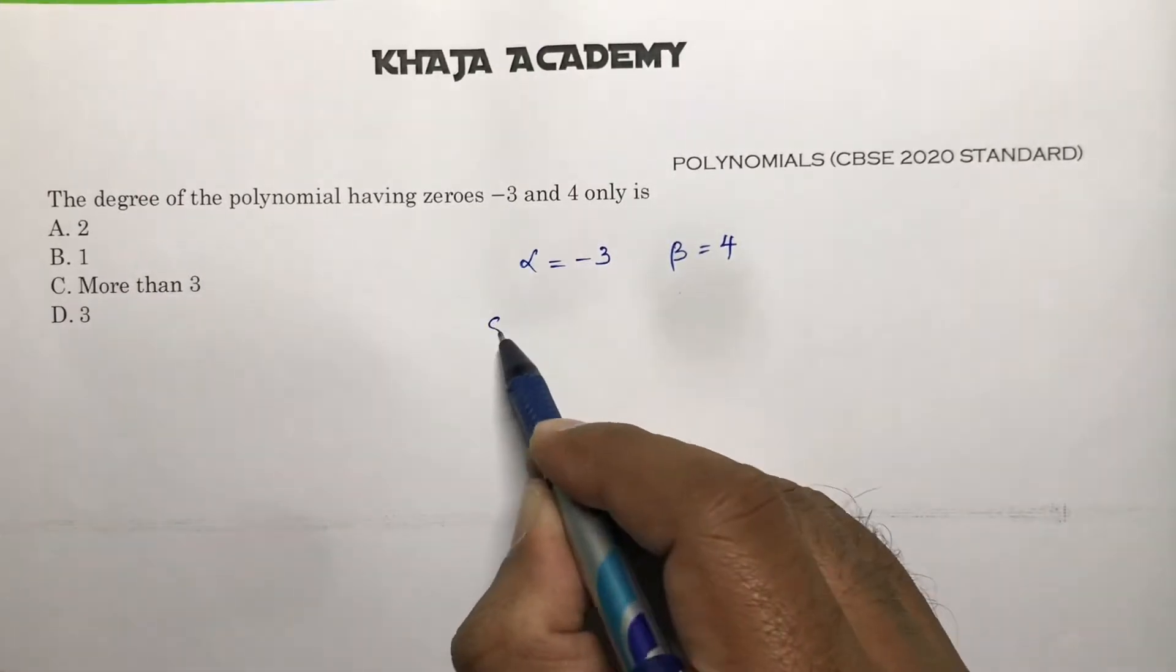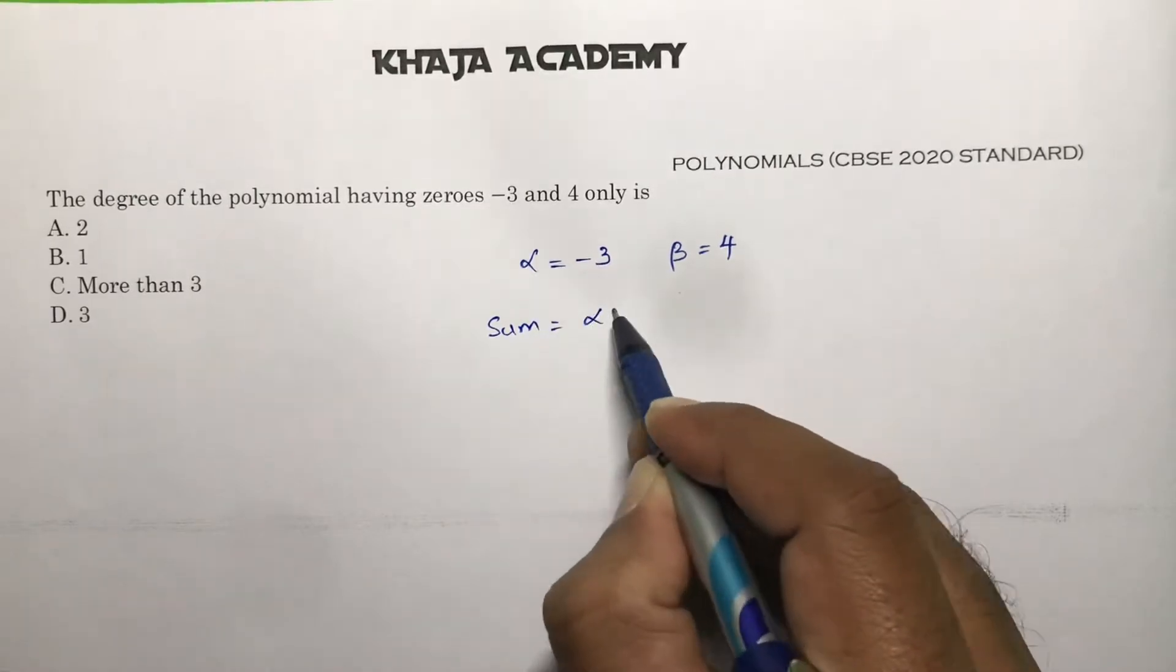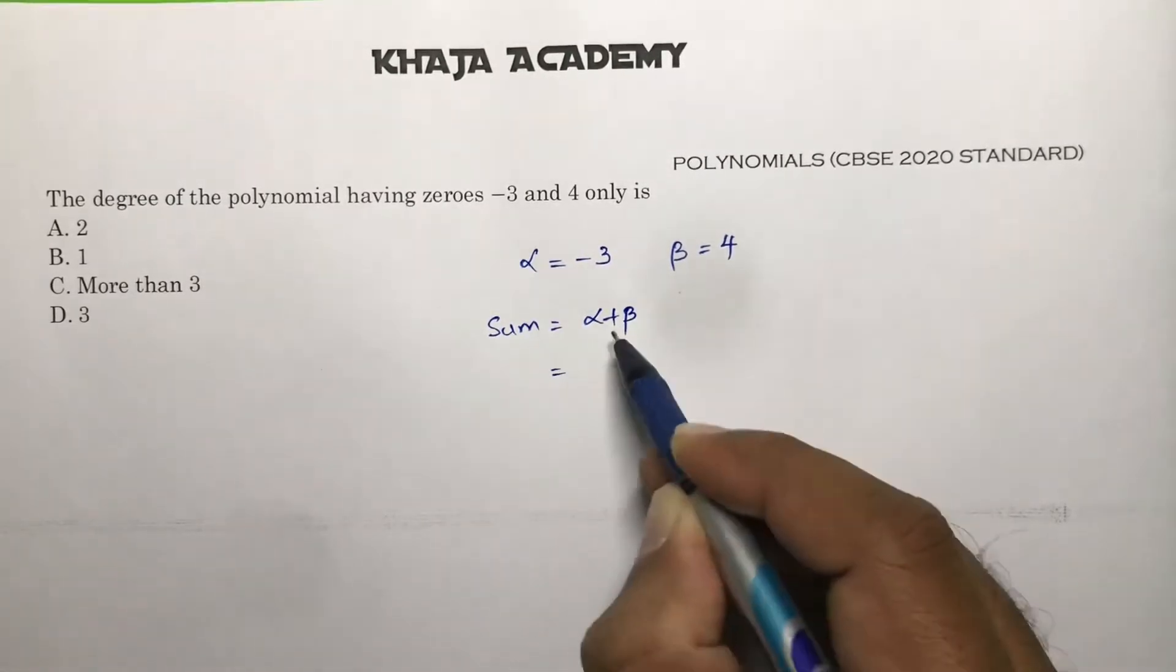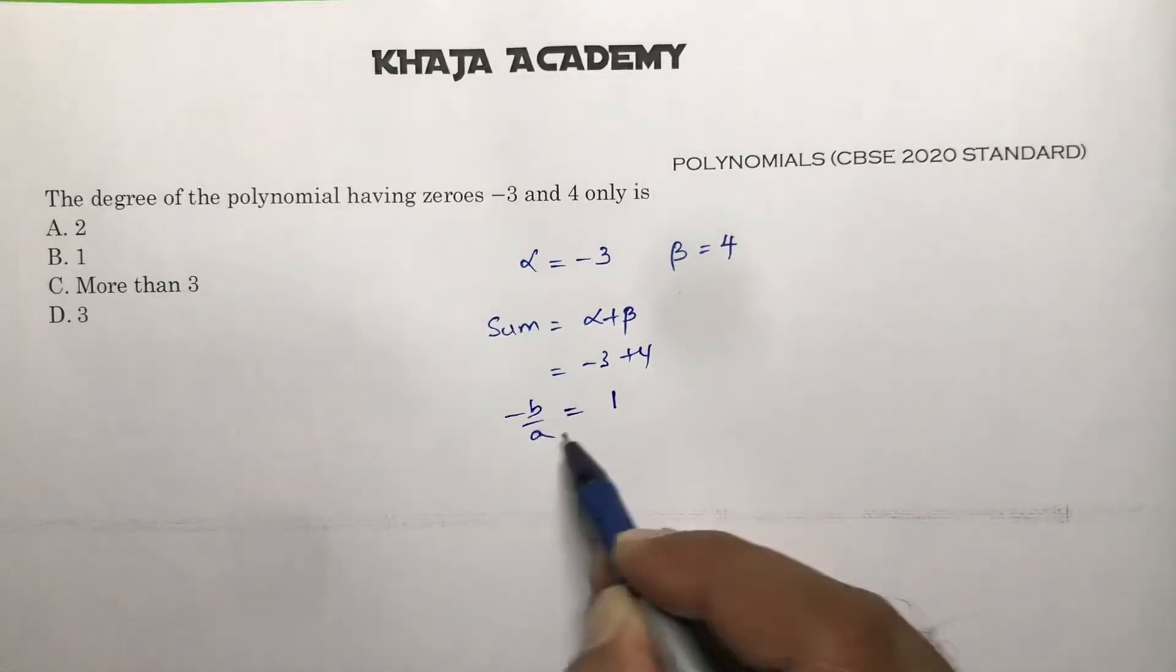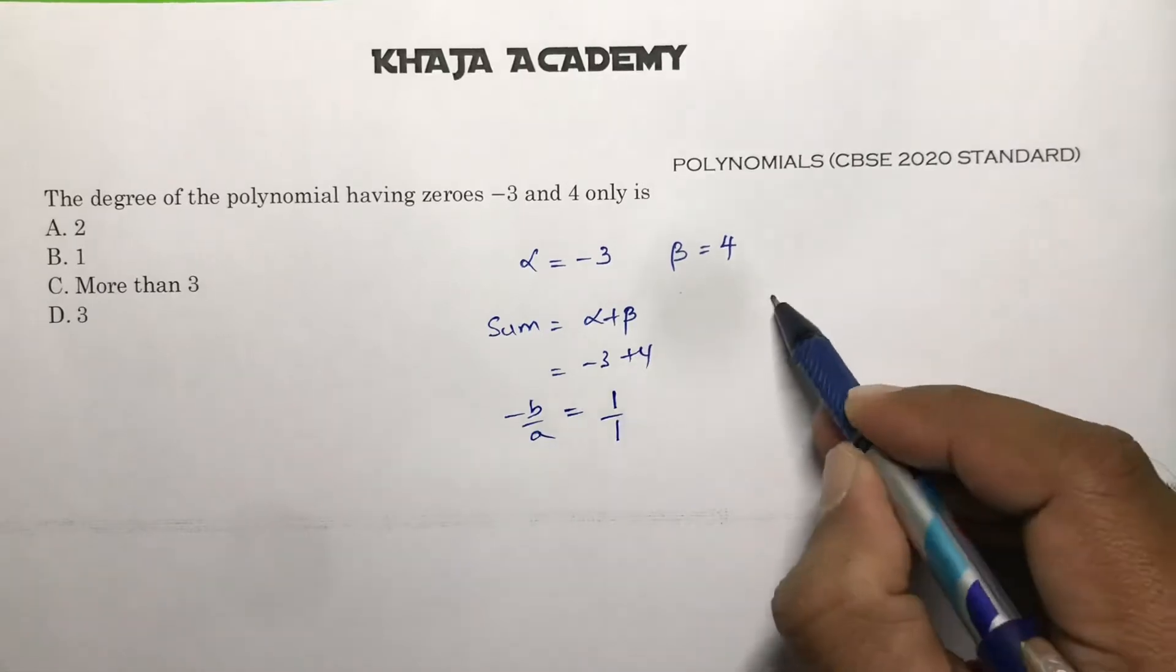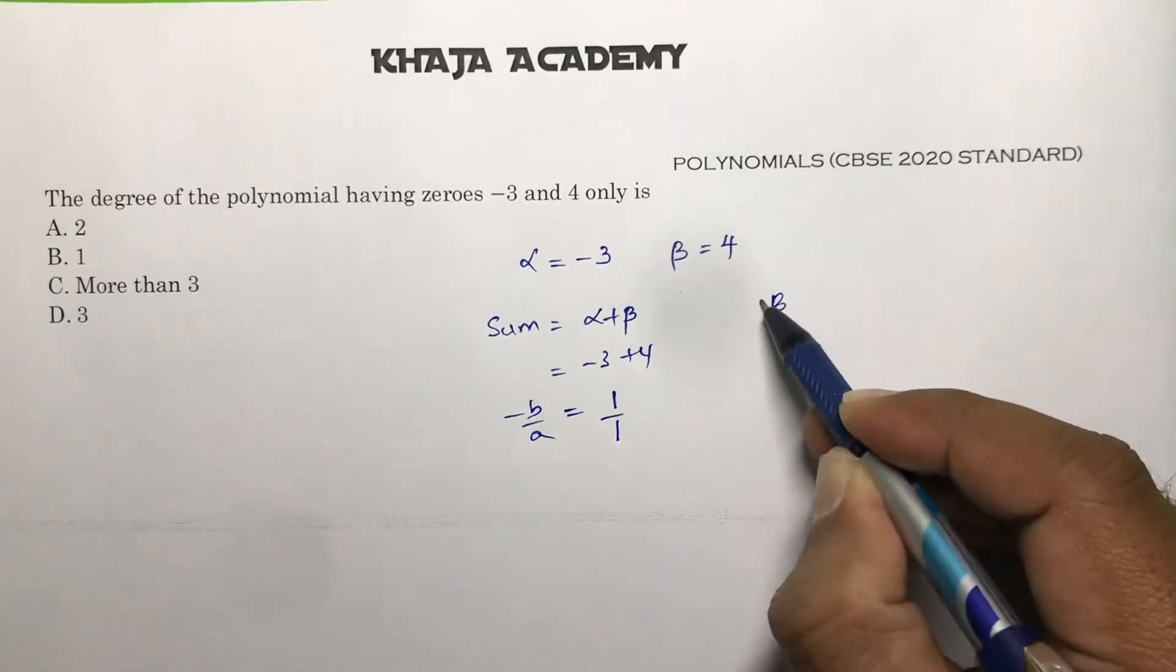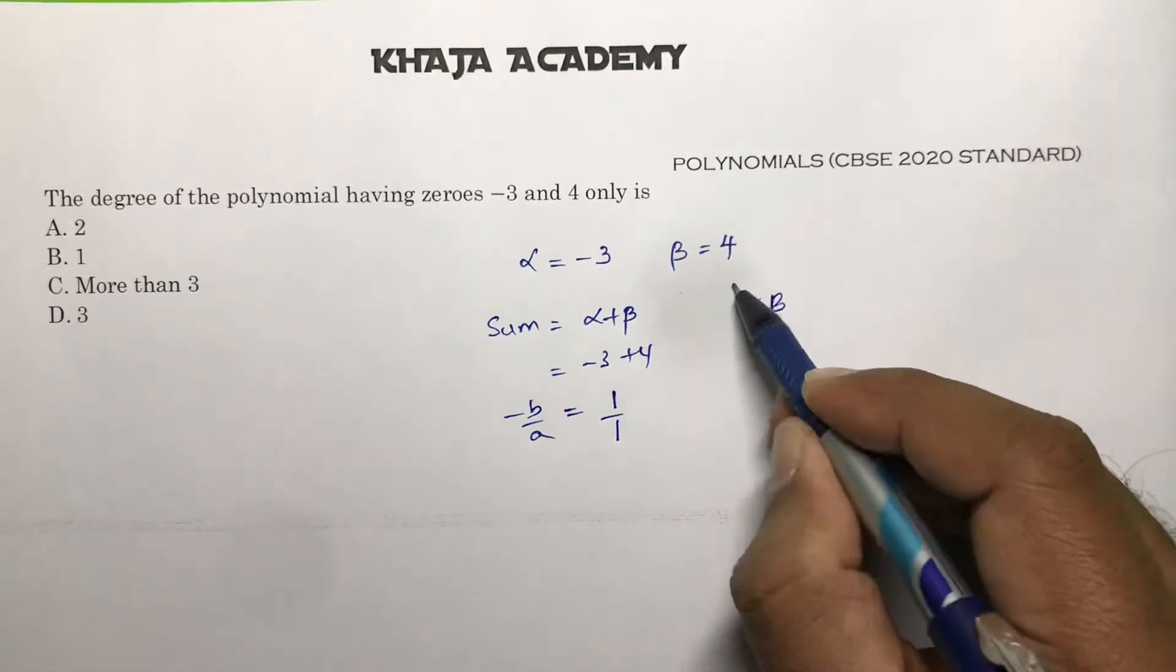So first calculate sum, that is alpha plus beta. That is minus 3 plus 4, that is 1. So minus b by a value is 1. And then I'll calculate alpha into beta, that is product.